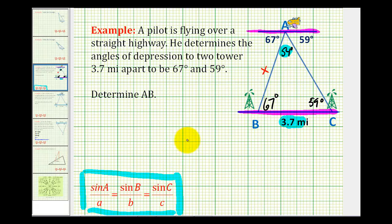So now we can set up a proportion with one unknown. We'll have the sine of 59 degrees divided by X must equal the sine of 54 degrees divided by 3.7 miles.